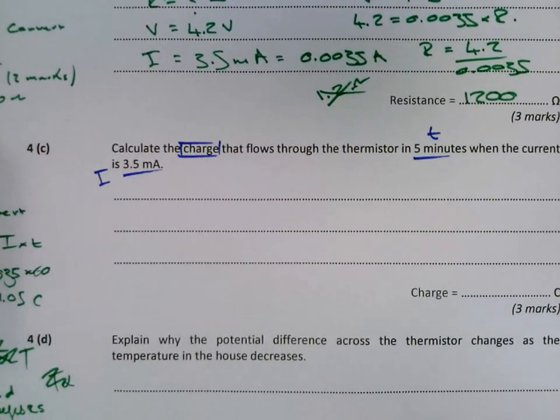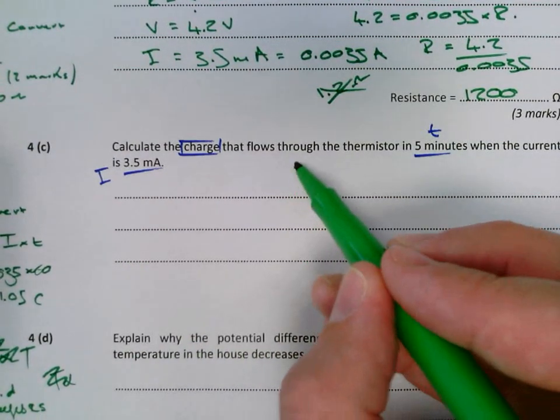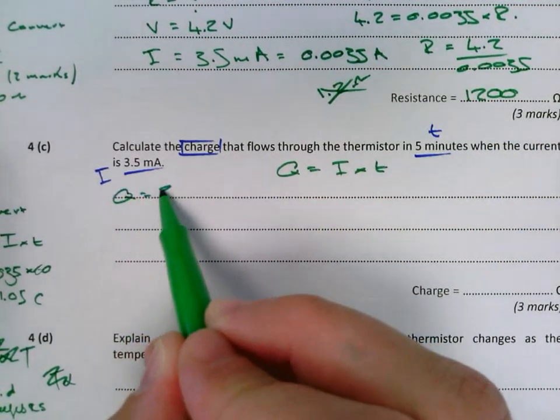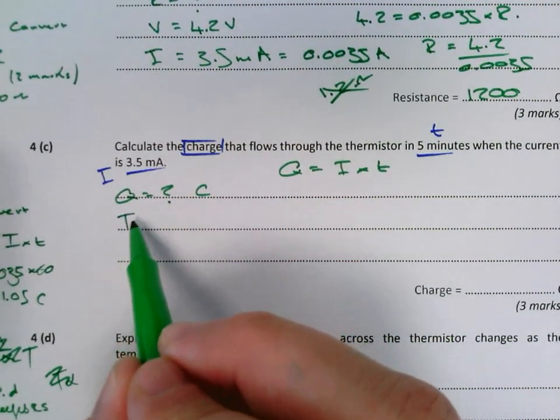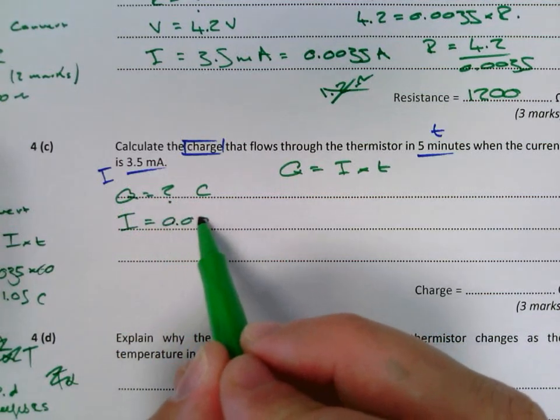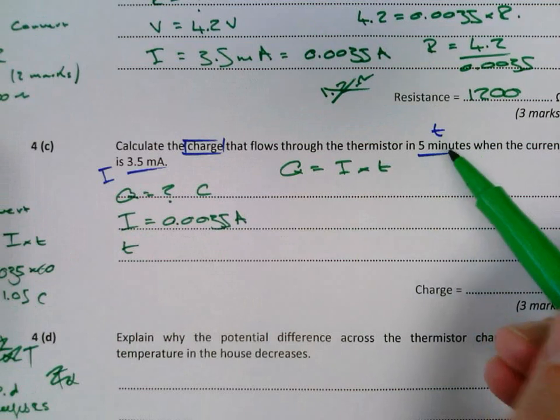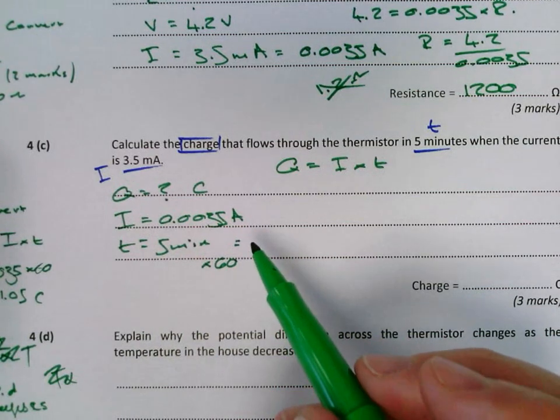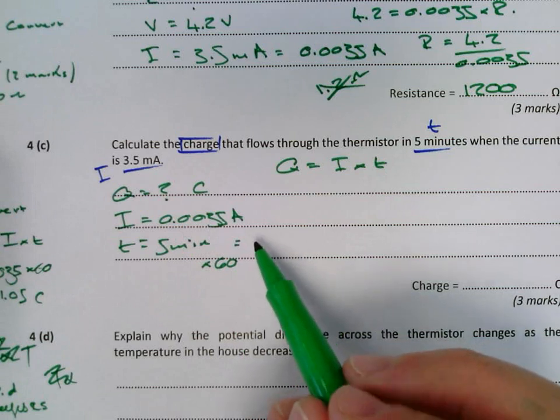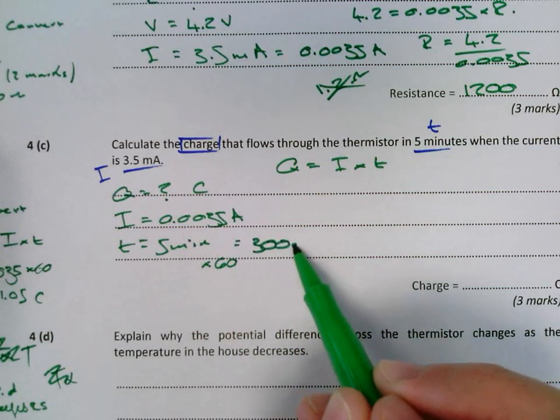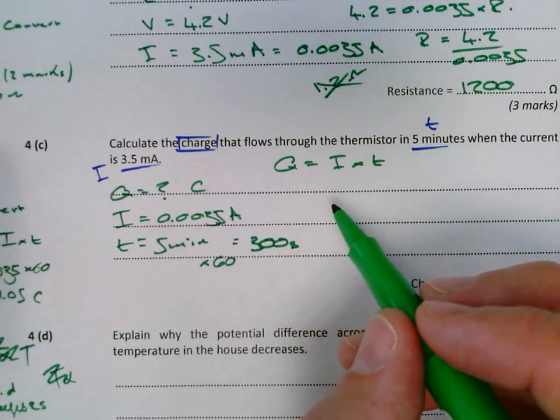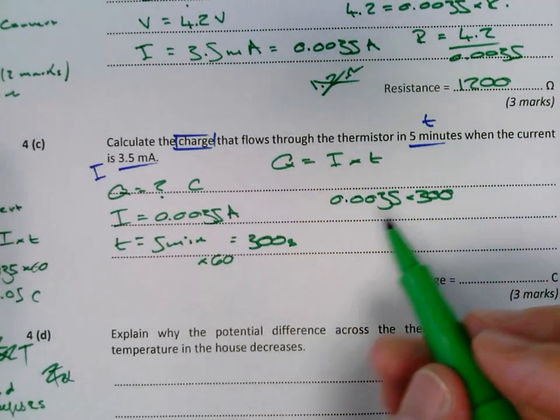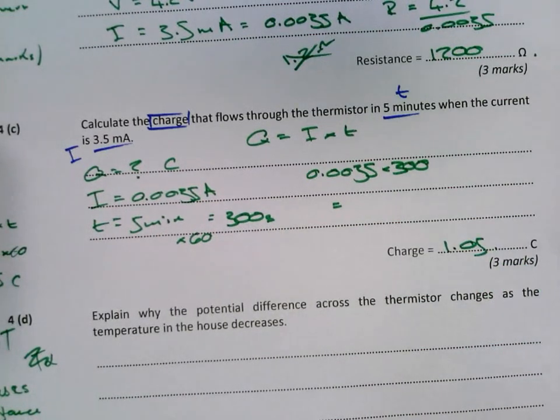Once you just calculate the charge, it gives you a time and a current. You need to know the equation Q equals I times T. So charge, we don't know, units is coulombs. I is the same as before, 0.0035 amps. T, you need to convert from 5 minutes, so times that by 60 into seconds, and that is going to give you 5 times 60, 300 seconds. And then pop that into the equation: 0.0035 times 300, and you get 1.05 coulombs. That is your answer.